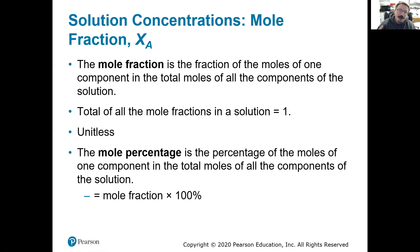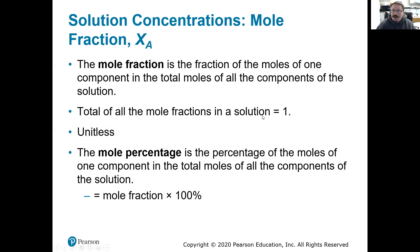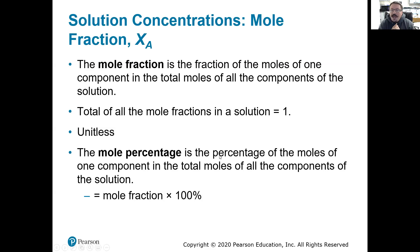Mole fraction: if we have a two-component mixture and we're looking at component A, what fraction of the whole thing is A? We take moles of A divided by total moles — moles of A plus moles of B. For a three-component mixture, it'd be moles of A over moles of A plus B plus C. Mole fractions should always add up to one. We can convert to mole percentage by multiplying by 100, so a mole fraction of 0.1 is 10%.